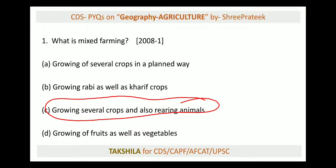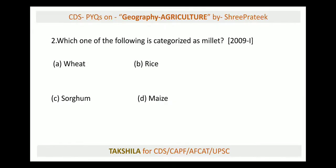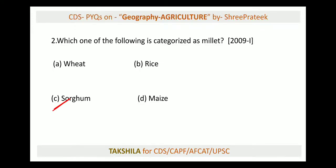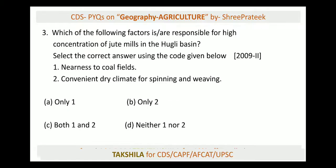Next question: which of the following is categorized as millet — wheat, rice, sorghum, or maize? The answer is sorghum. Millets are dry crops; sorghum, ragi — these are all called millets.